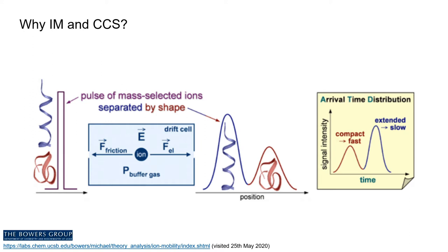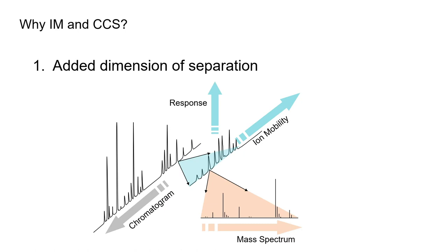This is also true for a range of different classes of compounds of biological interest, such as nucleic acids, lipids, carbohydrates, and so on. Not only this — ion mobility also finds application in many different scientific areas, like petroleomics and chemical material science, to mention a couple.